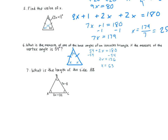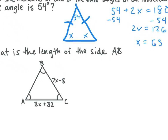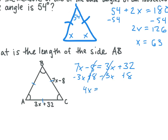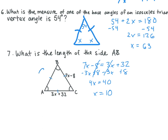What is the length of side AB? What type of triangle do we have here? Equiangular — and if it's equiangular, we know that it's also equilateral, so all the sides are going to be equal. So we set 7X minus 8 equal to 3X plus 32. We subtract 3X from both sides and add 8, getting 4X is equal to 40, and X is equal to 10. But that's not our answer — it's asking for AB. Plugging 10 into 7X minus 8, we get 70 minus 8, which equals 62.